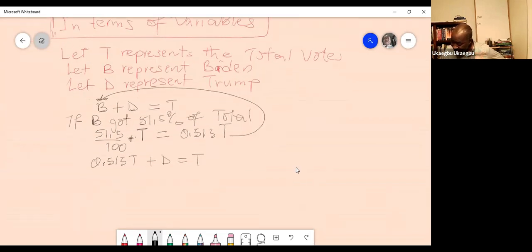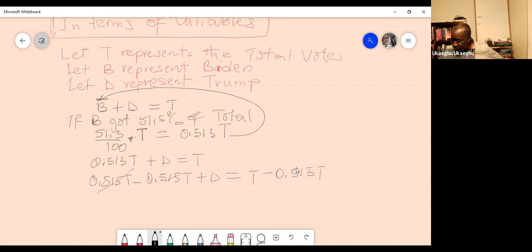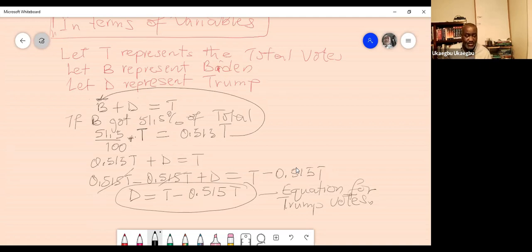You solve for D by subtracting 0.515T on both sides. So this crosses out this side. So this will be the equation D is equal to T minus 0.515T. This will be the equation for Donald Trump's votes. We are able to create an equation for Donald Trump based on the value of Biden.